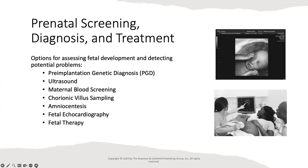Moving on to prenatal screening, diagnosis, and treatment: there are options for assessing fetal development and detecting potential problems. Expectant parents can use pre-implantation genetic diagnosis (PGD), ultrasounds, maternal blood screening, chorionic villus sampling, amniocentesis, fetal echocardiography, and fetal therapy. The patient's doctor will recommend what prenatal screening, diagnosis, and treatment is best for them.